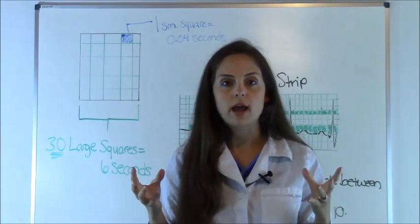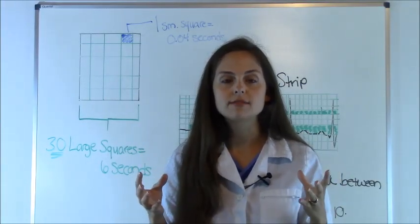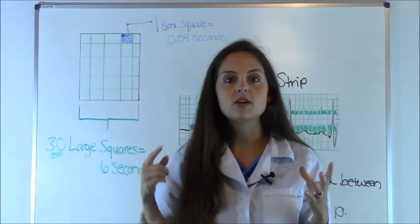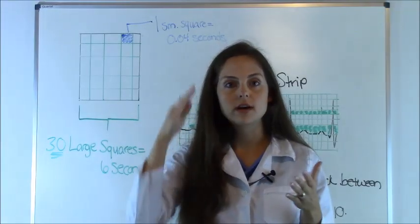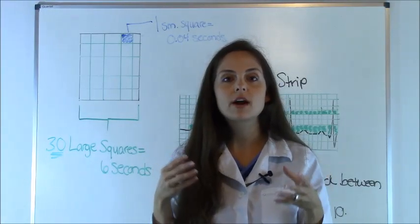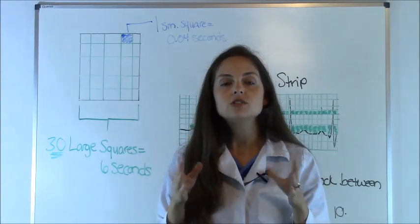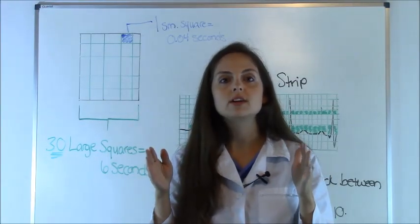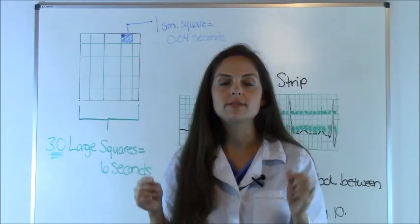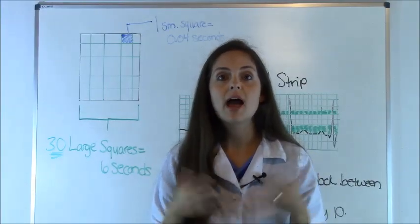To do ventricular rate, you're looking at your R waves. That is the huge spike on the EKG where the QRS complex is. And this is where your ventricles are depolarizing, meaning they're contracting. So you're going to count 30 large squares in between those R waves. So behind me, let me show you how to do that.